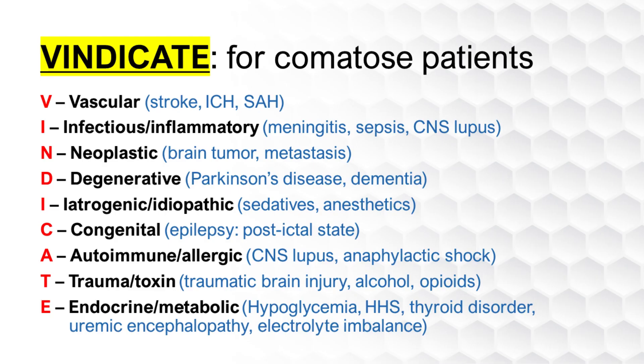Here is an example of using the mnemonic VINDICATE to remember the differential diagnosis for comatose patients. V — Vascular, such as Stroke, ICH, or SAH. I — Infectious or Inflammatory, such as Meningitis, Sepsis, or CNS lupus. N — Neoplastic, such as Brain Tumor or Metastasis. D — Degenerative, such as Parkinson's Disease or Dementia.